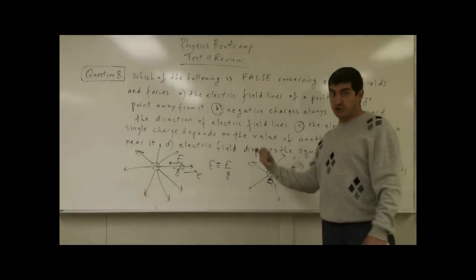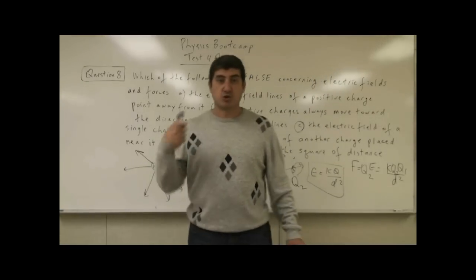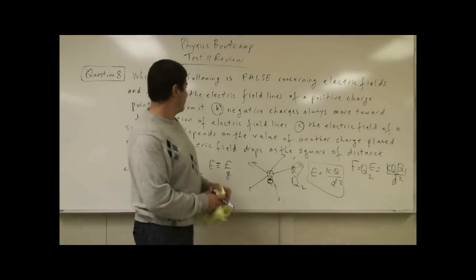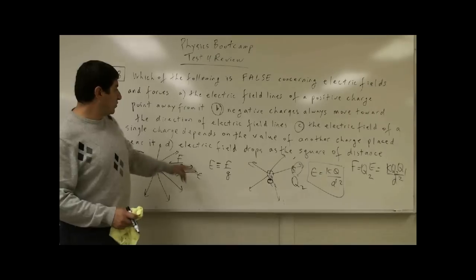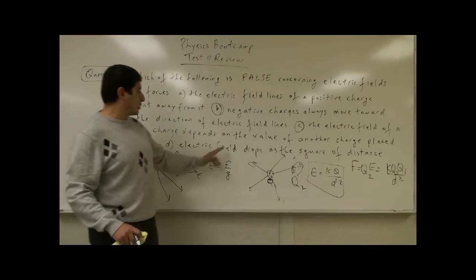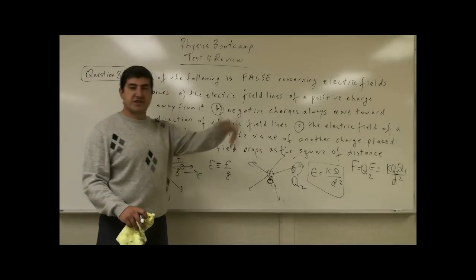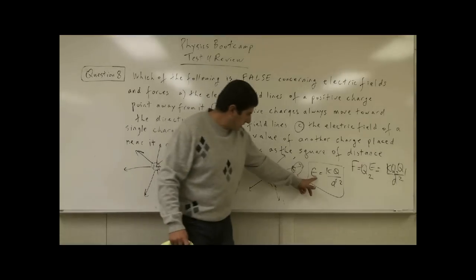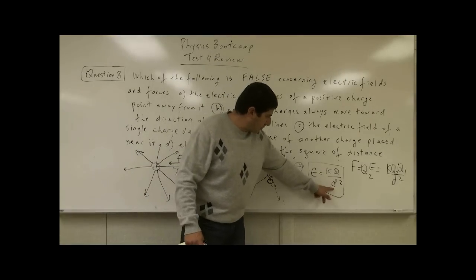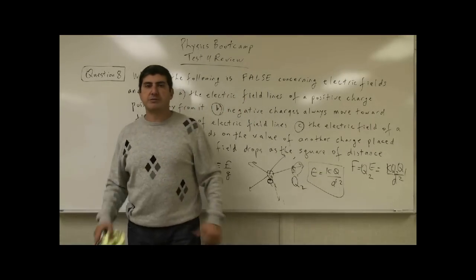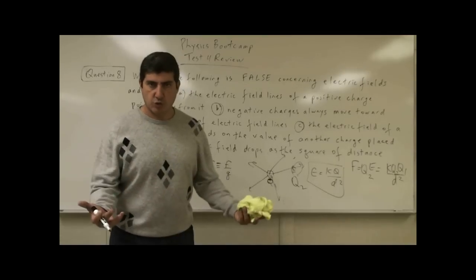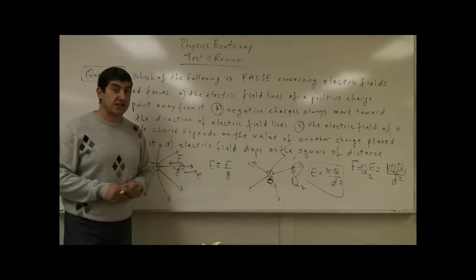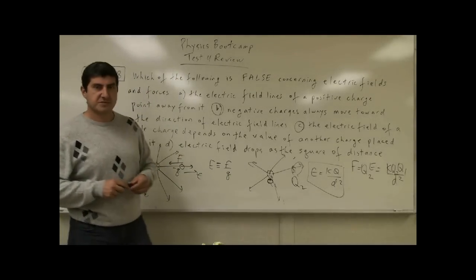This problem is tricky because it has two false statements — B and C. D says electric field drops as the square of distance, which is actually true: E equals KQ over D squared, so it drops as distance squared. So you can see there are two false statements here. Pretty tricky.